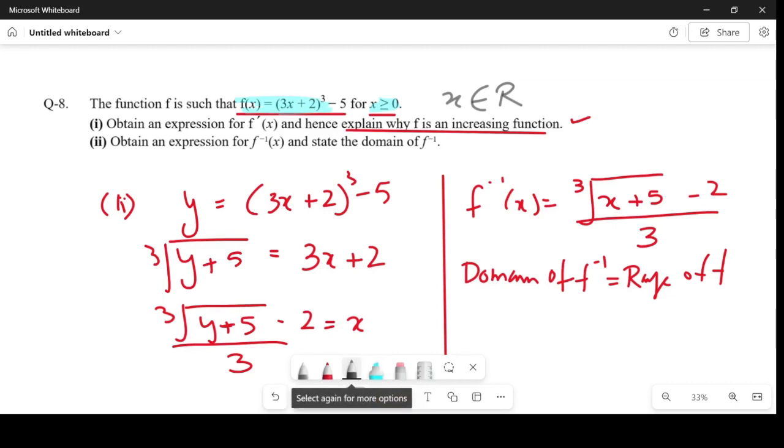The domain is x ≥ 0. If we plug in 0 here, we get 2³ which is 8, minus 5, which equals 3. So we get 3, and as x increases, this value also increases.